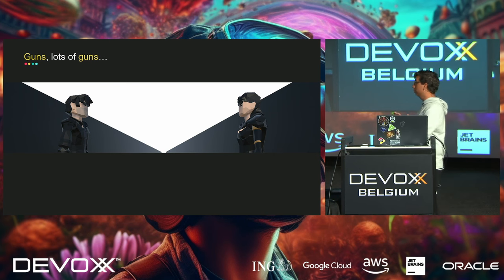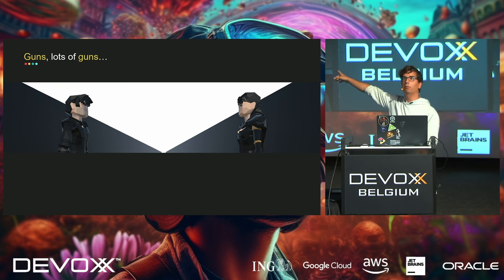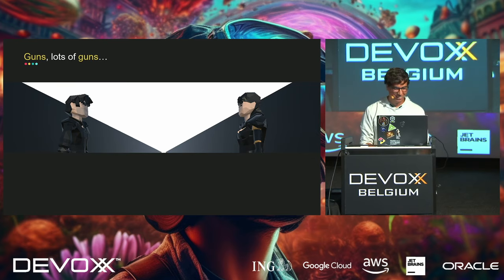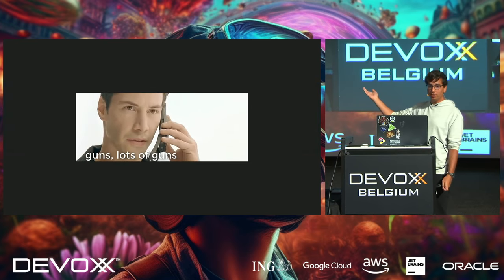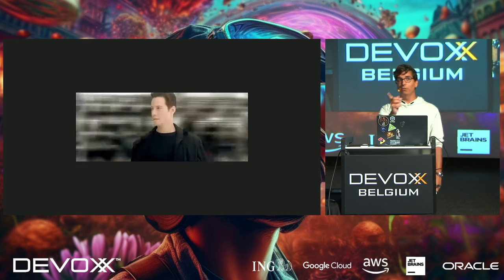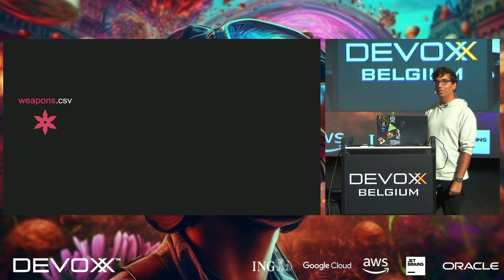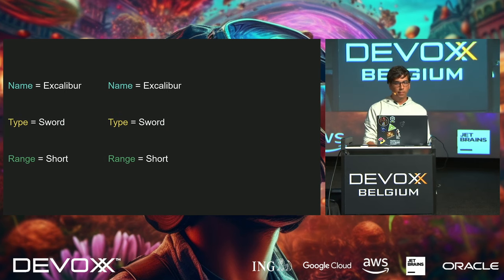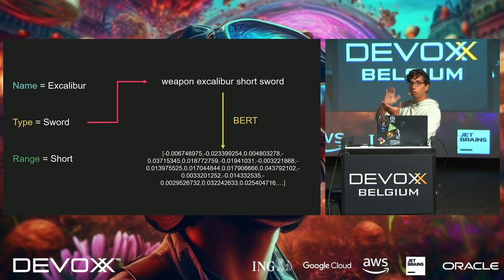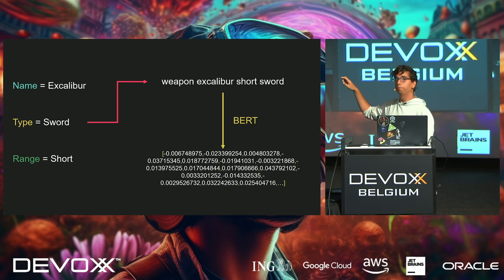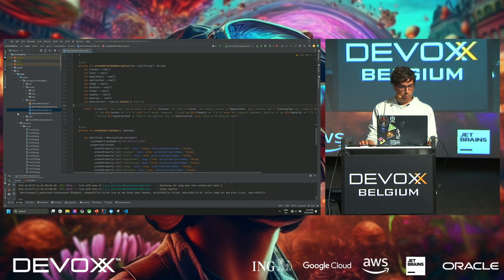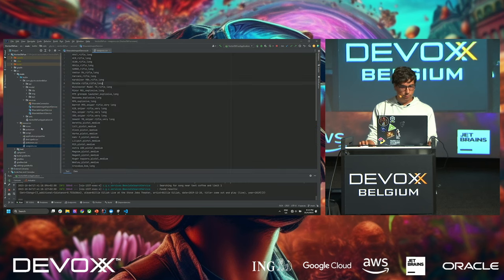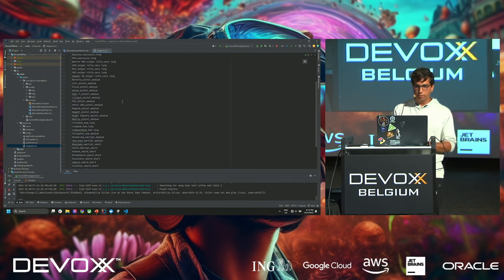On to our first search — 'guns, lots of guns,' as Neo said in The Matrix. We have a small dataset of weapons where each weapon has three properties: name, type, and range. For example, Excalibur, sword, short. When that is vectorized it becomes 'weapon Excalibur short sword' — all lowercase, property names removed. Then using a BERT model we get a vector representation of that.